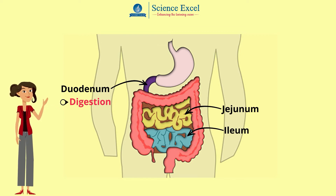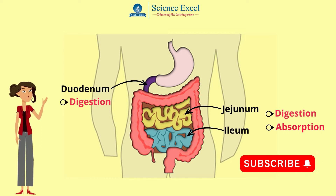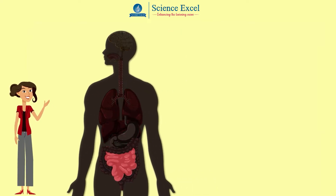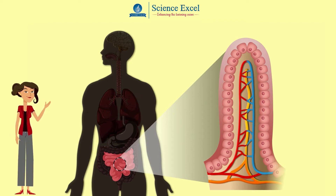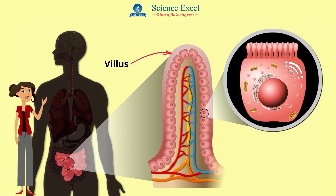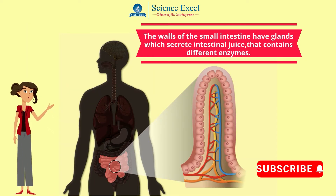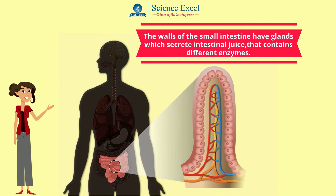The jejunum and the ileum, which form parts of the small intestine, not only help in the further digestion of the nutrients but also play a very important role in the absorption of these nutrients into the bloodstream. If we zoom into the structure of the small intestine, we can see it is highly folded and consists of millions of small finger-like projections called villi. Each villus is covered with cells which have even smaller projections on them called microvilli. The walls of the small intestine have glands which secrete intestinal juice that contains different enzymes.